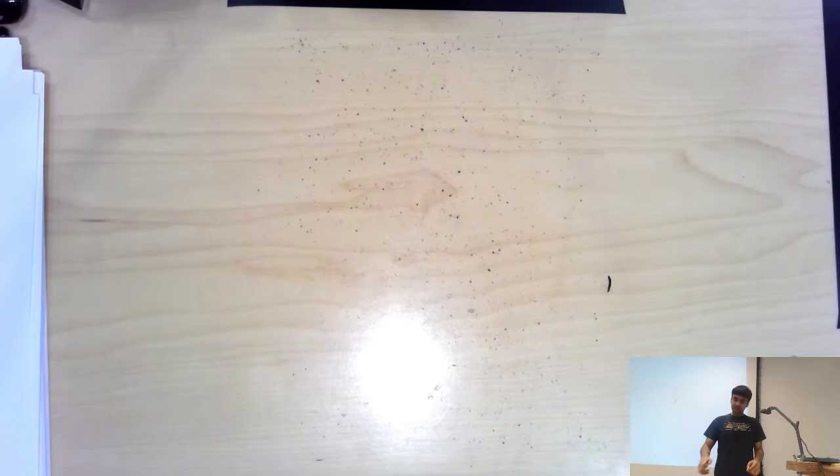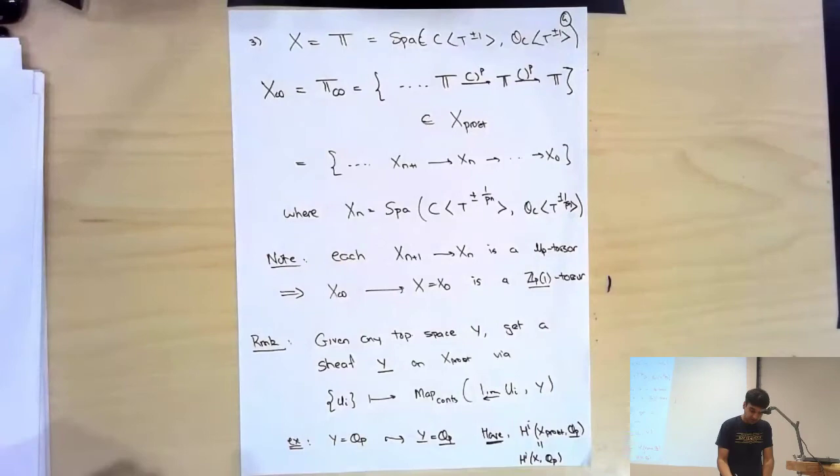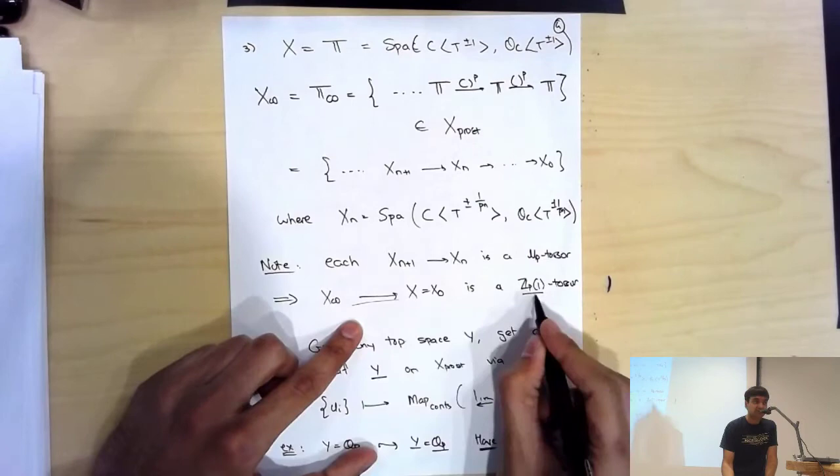The question was: can we think of these torsors as elements of H^1? Yes — this torsor gives an element of H^1(X, Z_p(1)) on the pro-étale site, and the same in the elliptic curve example.